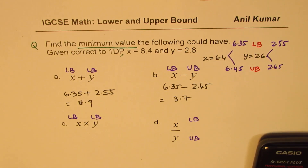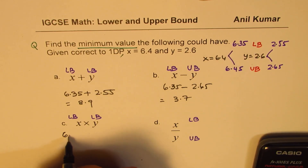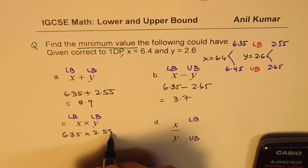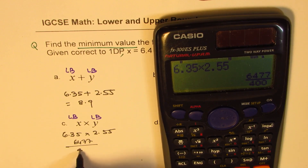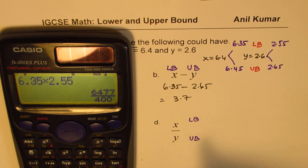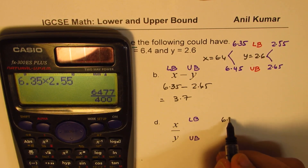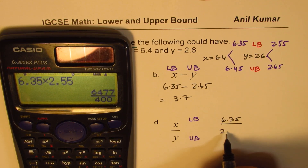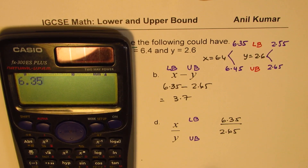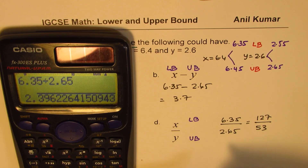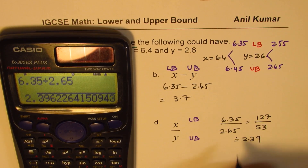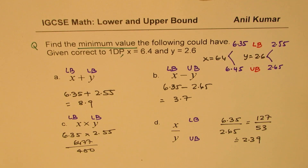When multiplying for the minimum, we take both lower bounds. So 6.35 times 2.55 equals 6477 over 400 — you can write it in decimals or fractions. For division, we take the lower bound for the numerator and the upper bound for the denominator — so 6.35 divided by 2.65 gives 127 over 53, which is approximately 2.39, or 2.4. That gives you the minimum value.